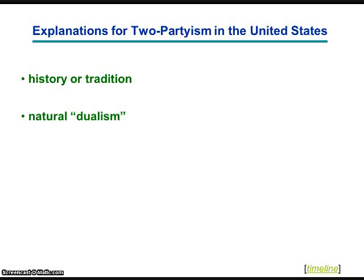For example, in the beginning, in the debates over the ratification of the Constitution, there were those who favored a stronger central government and the ratification of the Constitution — the Federalists — and those who favored Confederacy and opposed ratification of the Constitution — the Anti-Federalists. These two positions ultimately became the basis for the first two political parties, the Federalist Party and the Jeffersonian Republican Party.